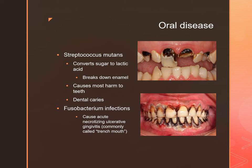Periodontitis results in pockets of pus that form around the teeth and can eventually destroy the surrounding tissues and bone, primarily caused by Porphyromonas gingivalis. Fusobacterium and Treponema can also cause acute necrotizing ulcerative gingivitis, or ANUG, also non-clinically referred to as trench mouth.